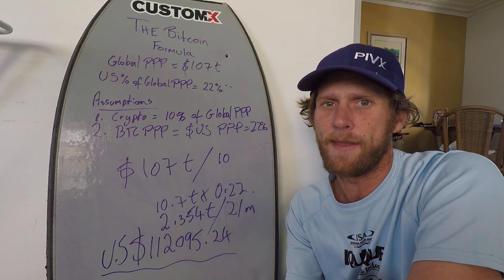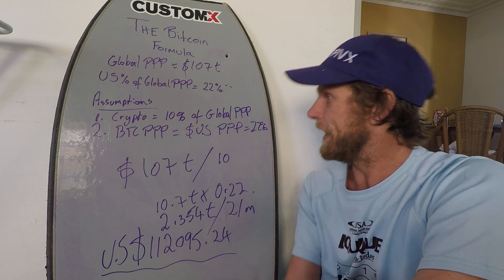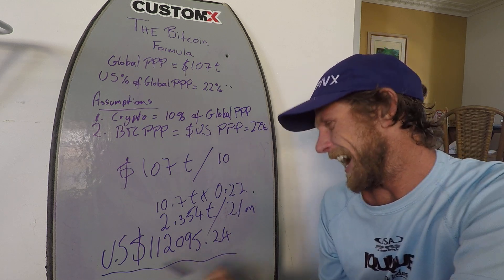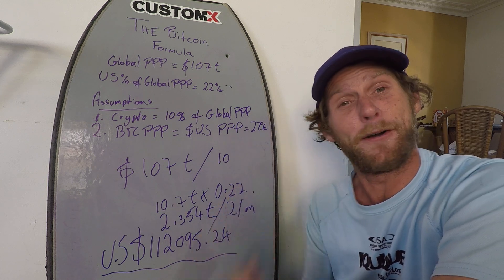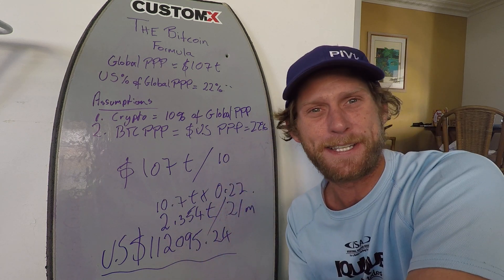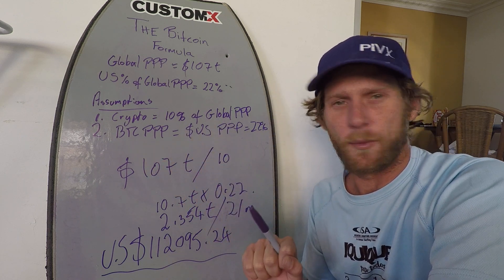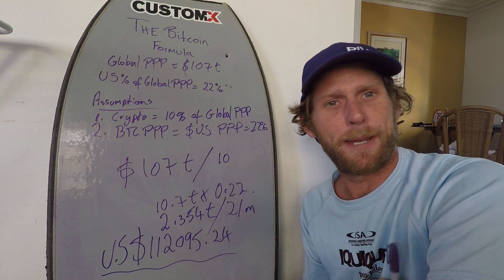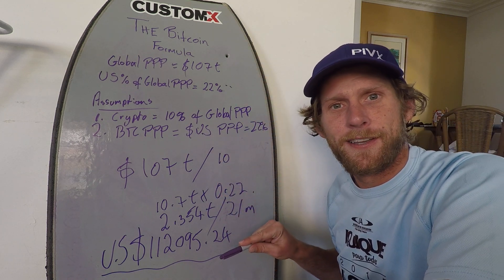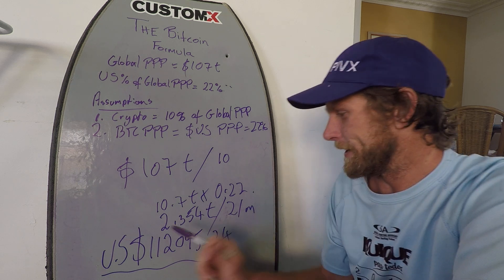I could be very wrong with that, but I think the altcoin market provides too much value. Anyway, that's my opinion and that's my Bitcoin formula. My first target is $112,095.24 US. You do your own formulas — you can easily substitute how much you think the world will go to crypto, and how much you think Bitcoin will hold dominance. By building these simple formulas, you actually give yourself a really solid profit target, a really solid figure to go for.